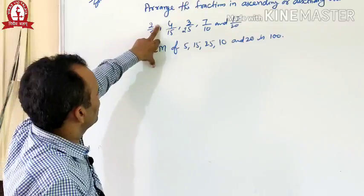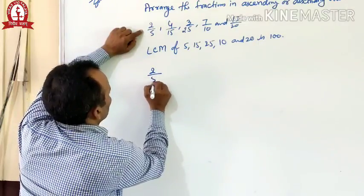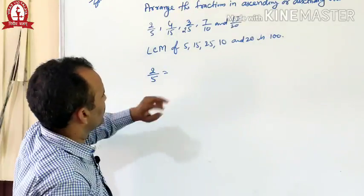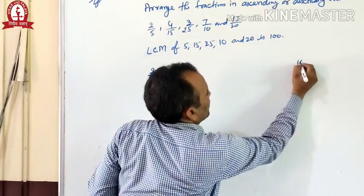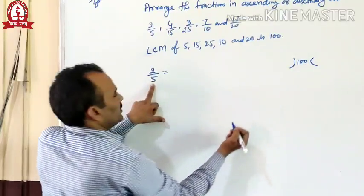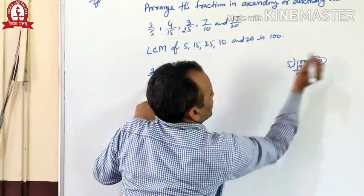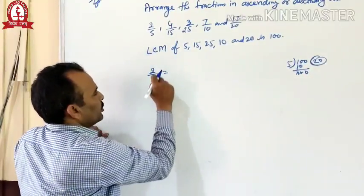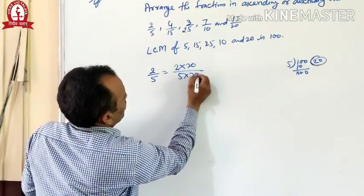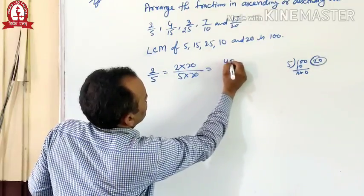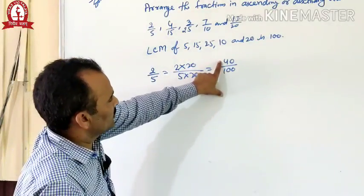Then change each fraction so it has a denominator of 100. First, take 2 by 5. What is the fraction equivalent to 2 by 5 whose denominator is 100? Divide 100 by the denominator 5 — the quotient is 20. Then multiply both numerator and denominator by 20. The equivalent of 2 by 5 is 40 by 100.